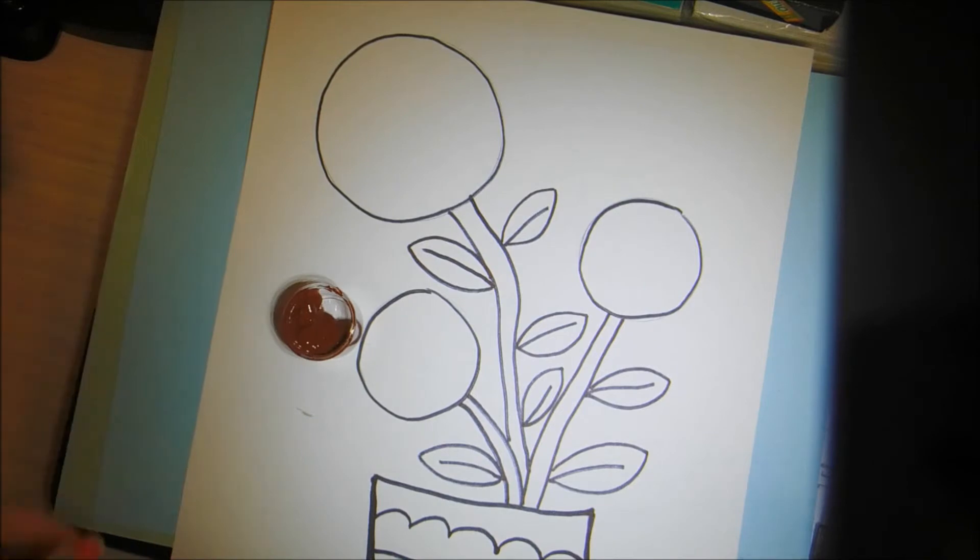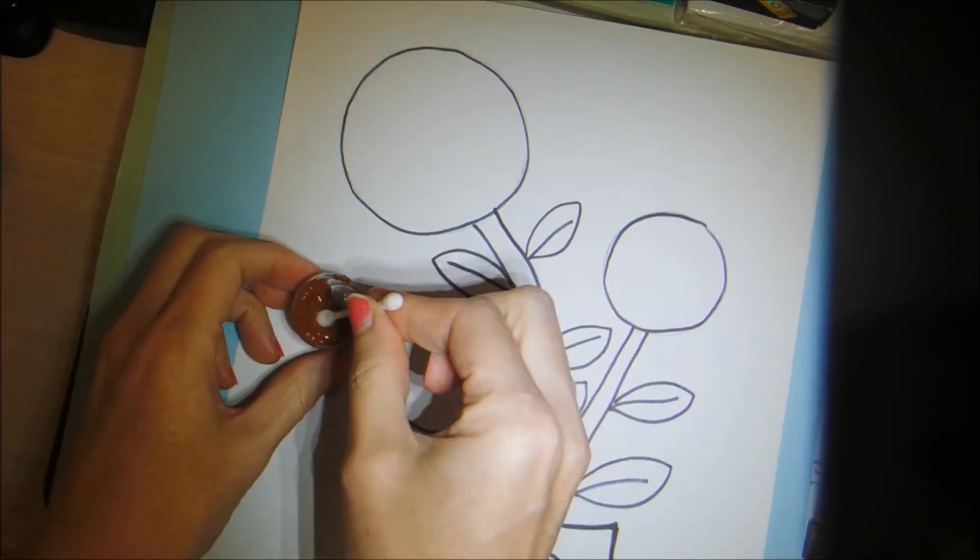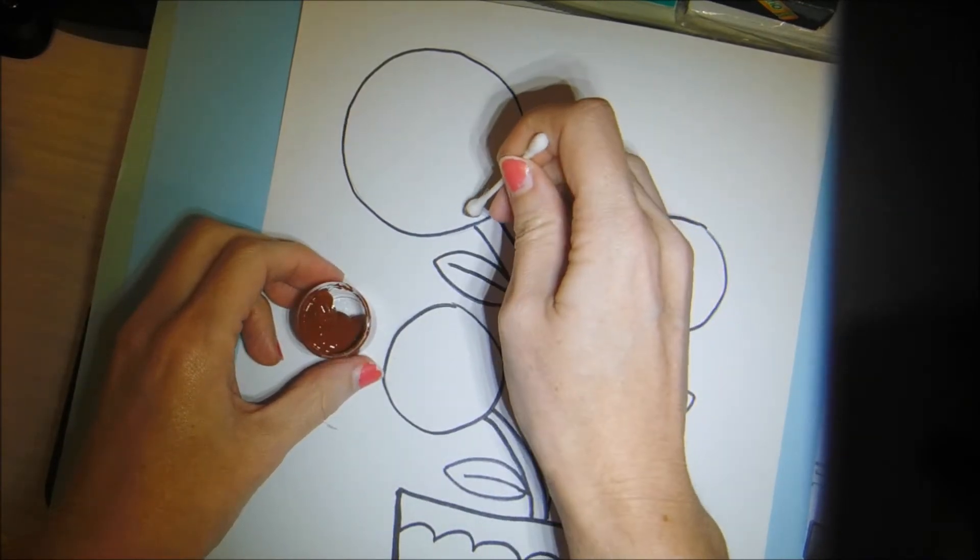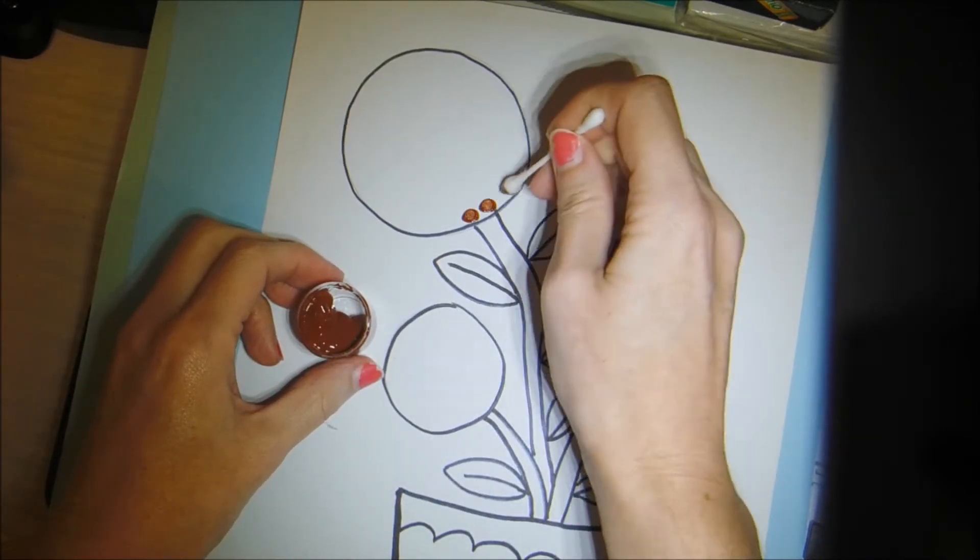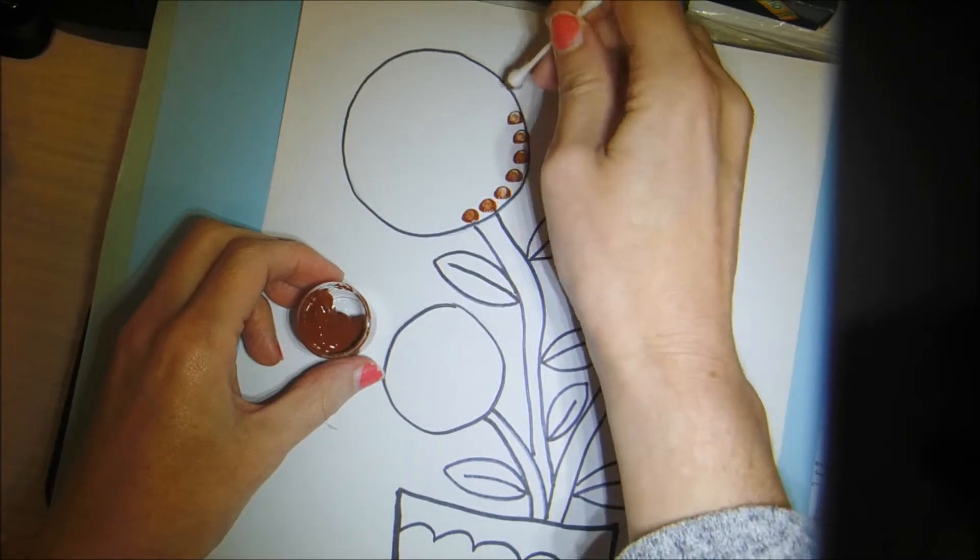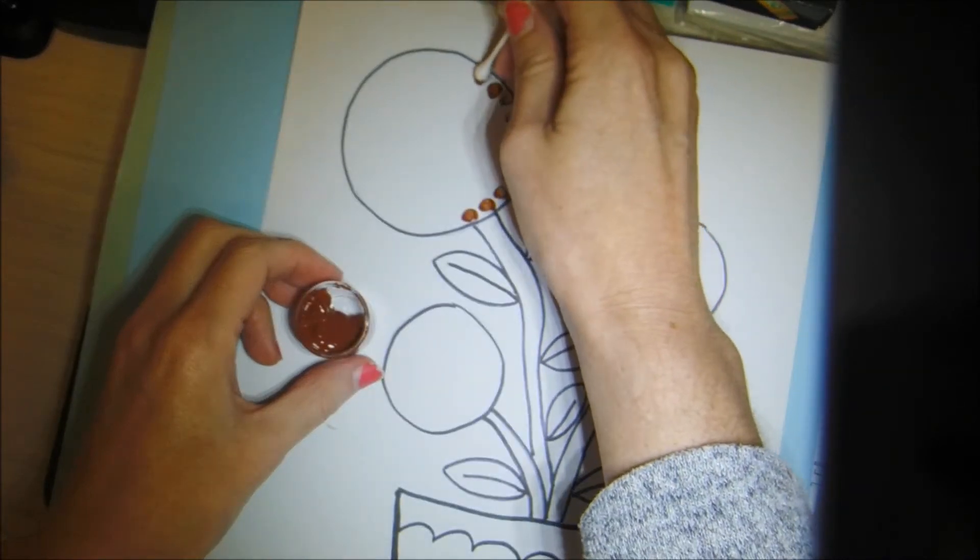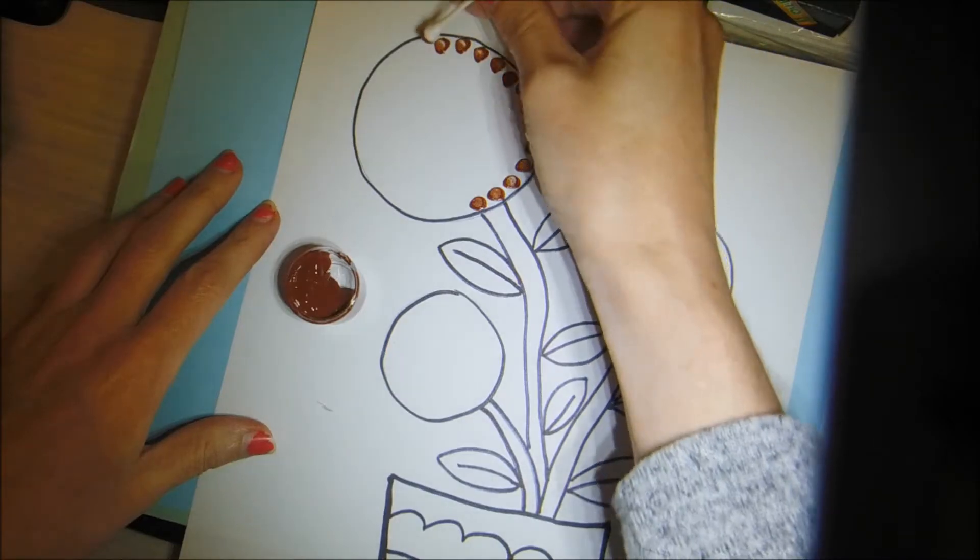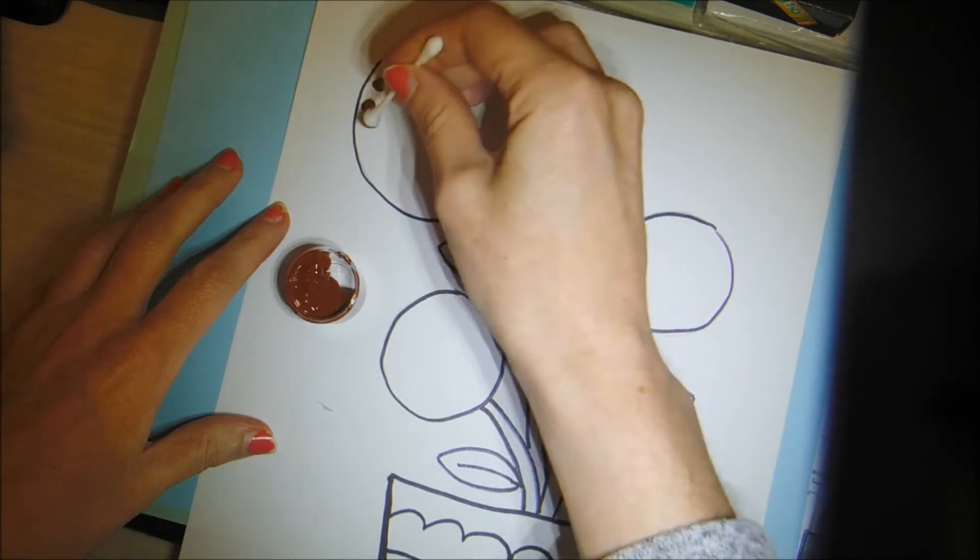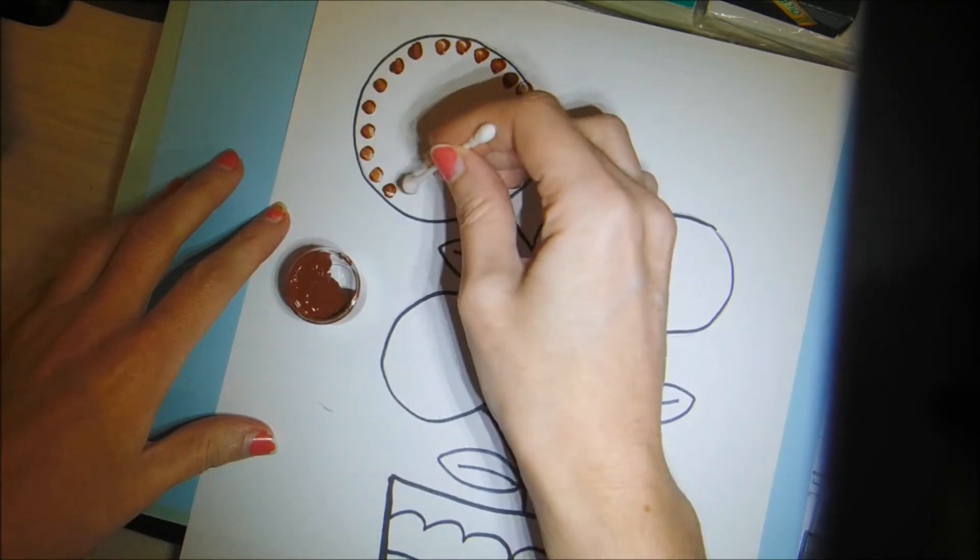So using the brown paint, you're going to dip the Q-tip in and start to dab little circles inside of the big circle. Space them out a little bit and these are going to be our sunflower seeds. You're going to be just dabbing all along the inside and really filling up all of the circles.